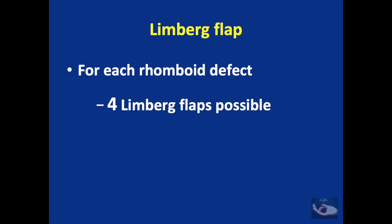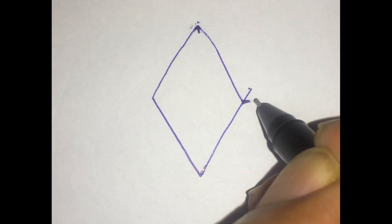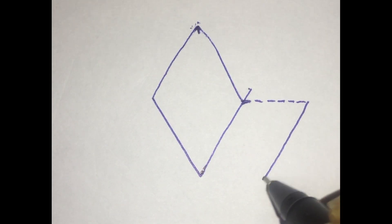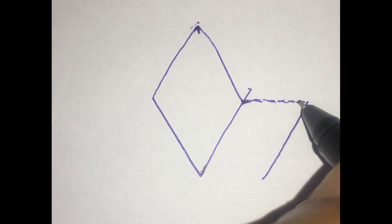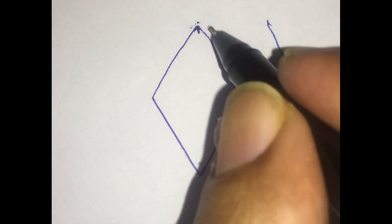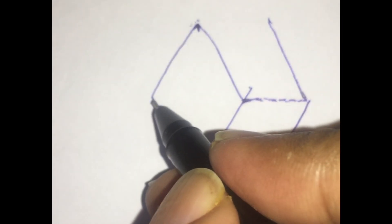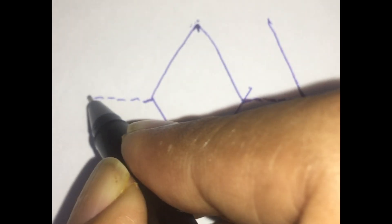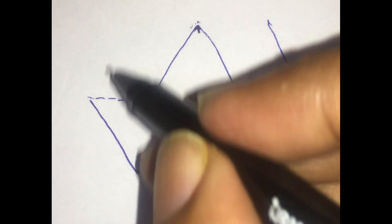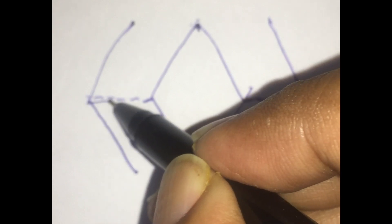We saw an example of a Limburg flap for a rhomboid defect. However, for each rhomboid defect, four Limburg flaps are possible. The first example extended the short diagonal and drew the flap in one direction. However, we can also extend the diagonal and draw the flap in a different direction, raising a flap based superiorly. The short diagonal can also be extended to mark the flap in yet another orientation.